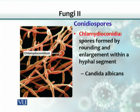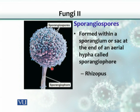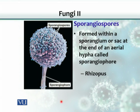Candida albicans can produce either blastoconidia or chlamydoconidia. The second kind of asexually produced spores are enclosed in a sac, and the name is sporangiospores. At the end of the hyphae, a sac is formed, and within the sac a number of spores are generated. The stalk that bears that sac is called the sporangiophore — just as the conidiophore bears conidia spores. Rhizopus is a typical example of sporangiospores.